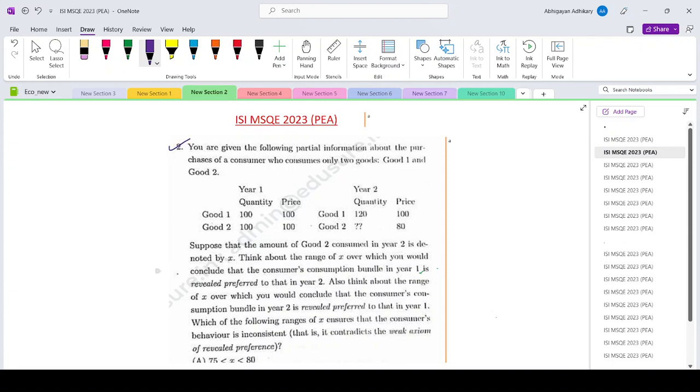You are given the following partial information about the purchase of a consumer who consumes only two goods, good 1 and good 2. So these are the data that we are given. Suppose that the amount of good 2 consumed in year 2 is denoted by x. Think about the range of x over which you would conclude that the consumer's consumption bundle in year 1 is revealed preferred to that in year 2, and also think about a range of x over which you would conclude that the consumer's consumption bundle in year 2 is revealed preferred to that in year 1. Which of the following ranges of x ensures that the consumer's behavior is inconsistent?